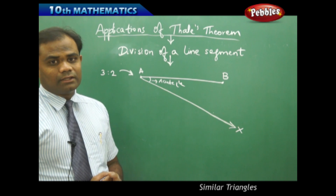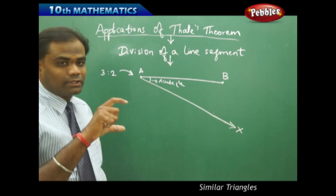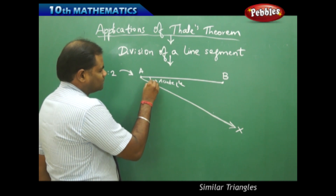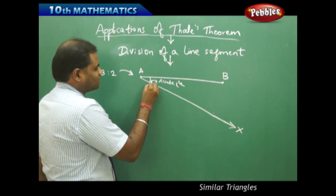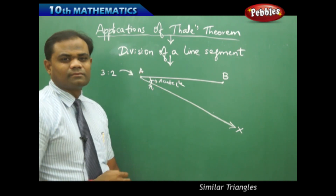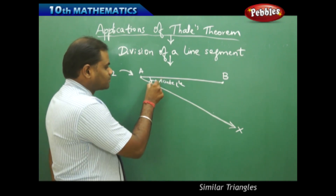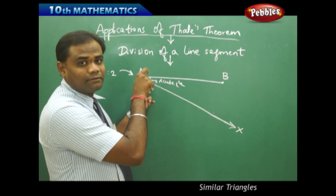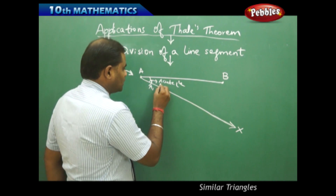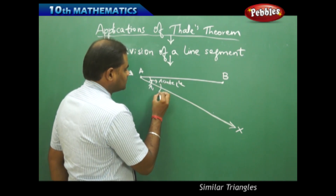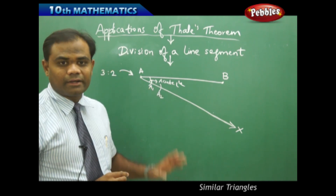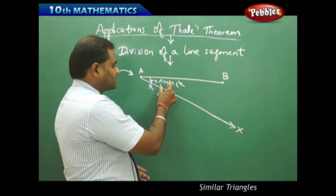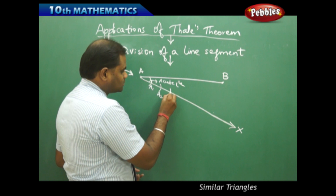Once I draw the acute angle, I take a suitable measurement with the compass and cut an arc, which I call A1. From A1, taking it as center, I again cut an arc with equal measurement as A-A1, giving me A2. Similarly, repeating the same measurement with A2 as center, I cut an arc using the compass to get A3.